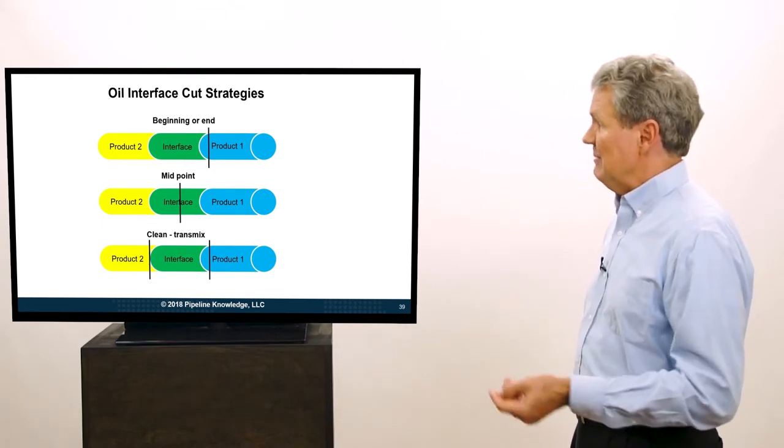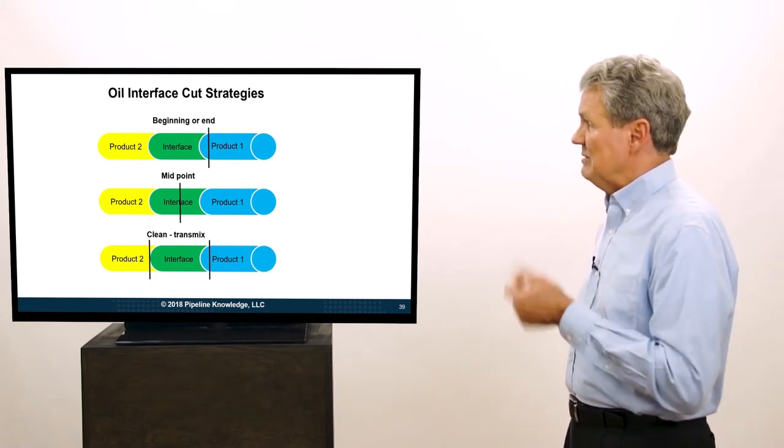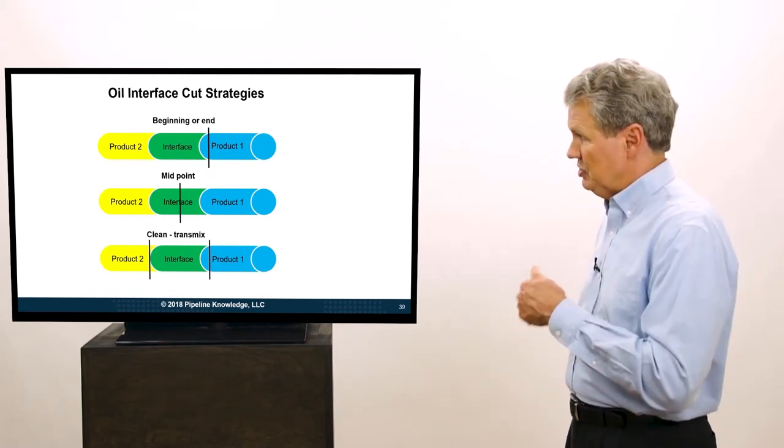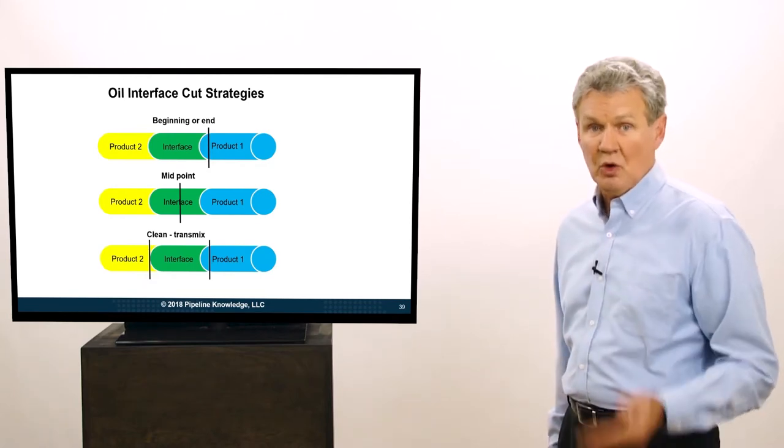So a quintessential example here, if we have in front product one is premium gasoline and product two is mid-grade gasoline, we might take the entire interface into the mid-grade.